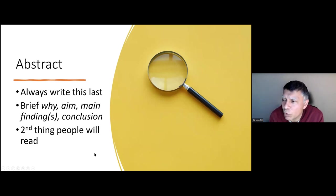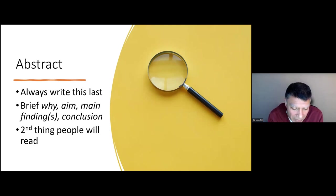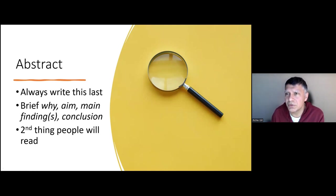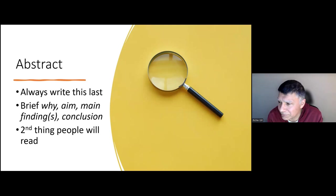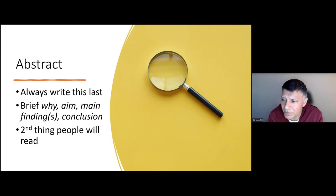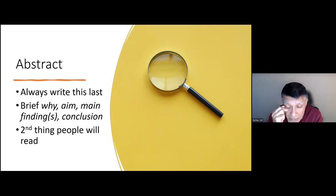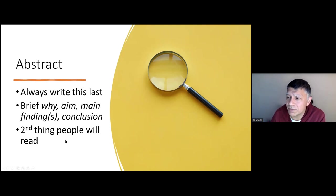Always write the abstract last. You need to be very brief in summarising the why, the aim, the main findings, and the conclusion. If you have numerical results, give the main numerical result in the abstract. It's the second thing people will read and often the point where they stop reading. What it doesn't have space for is limitations — if you write the abstract incorrectly, that might be the message taken away from your work.